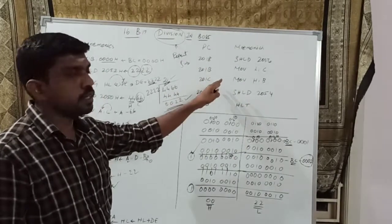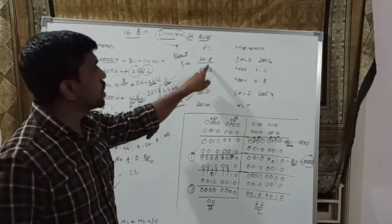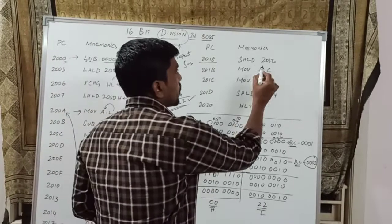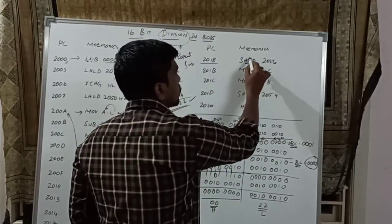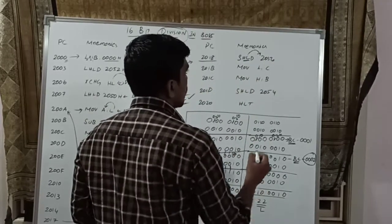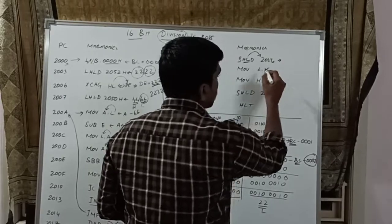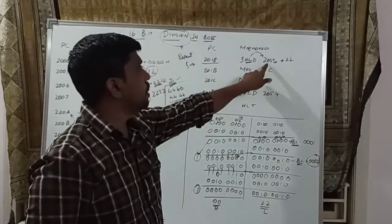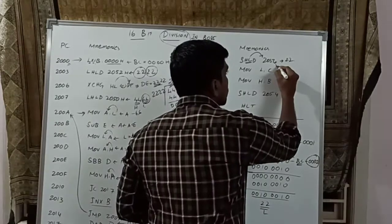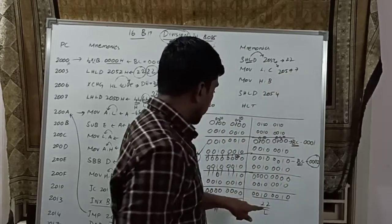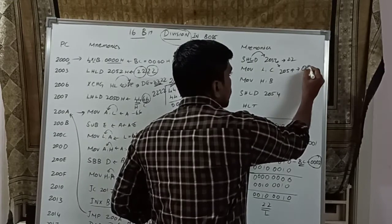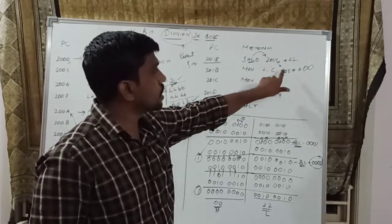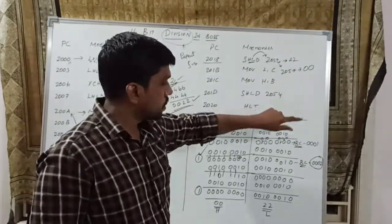The next portion is the result storing section. The memory location is 2018H. In this memory location, the instruction is SHLD 2056H. Whatever value is present in the HL register pair, that content is transferred to memory location 2056H. First, the L register content is moved to 2056H — L content is 22H, so 22H is stored at memory location 2056H. The next successive memory location is 2057H for the H register.